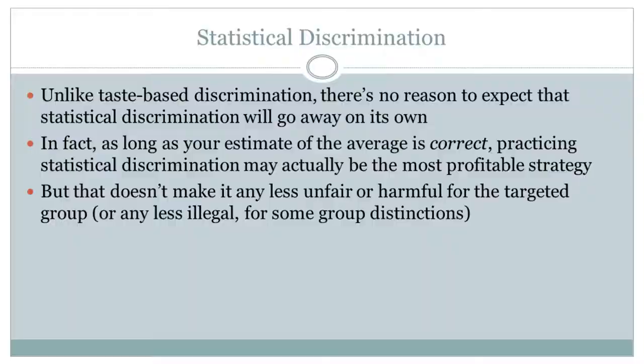The strange thing about statistical discrimination is that when people first hear about it, they assume: well, it's based on statistics, the assumptions might actually be correct on average, and it is profit-maximizing — so maybe it's not so bad. But in fact it can be more odious in some ways. Unlike taste-based discrimination, statistical discrimination doesn't get booted out of the market in the long run — if those assumptions are on average correct, it's unfair but profit-maximizing. So statistical discrimination sticks around. Just because it's profitable doesn't make it any less unfair.